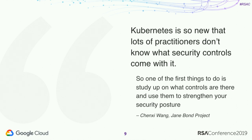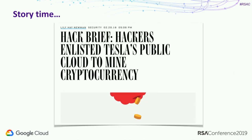Google has done a lot with containers and Kubernetes is something we think is pretty cool. I hear a lot of really interesting things come out of other parts of the community. One quote I love related to container security is that Kubernetes is so new that lots of practitioners don't know what security controls come with it. One of the first things to do is study up on what controls are there and use them to strengthen your security posture. And we're already seeing security events with containers happening today.